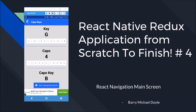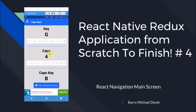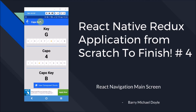What is up guys, it is Barry Michael Doyle here and welcome to the fourth part of this React Native Redux tutorial where I'm showing you how to build this Kappa Keys application from scratch to finish. In this video we are going to tackle React Navigation, which is a node module for React that allows us to work with different screens. In this application we only use one screen, but I thought I'd introduce this so that in case you want to make further screens later on, we have a good boilerplate going. The main thing being implemented is the header, which forms part of the Stack Navigator in React Navigation's module.